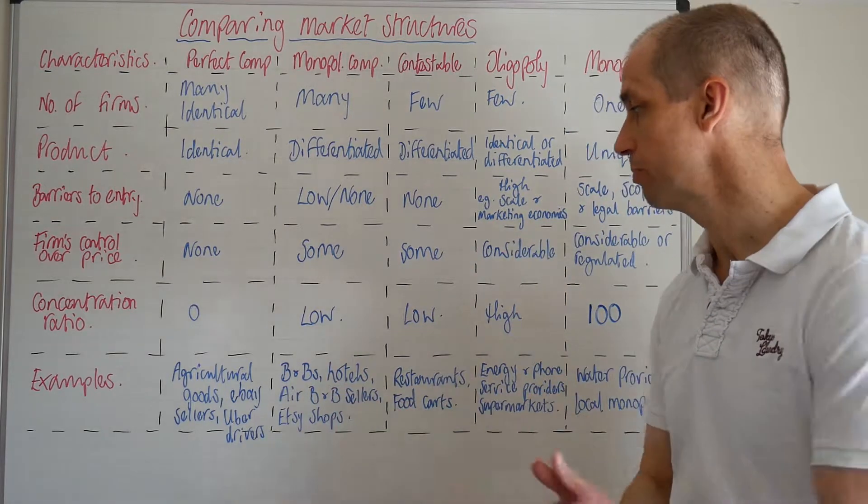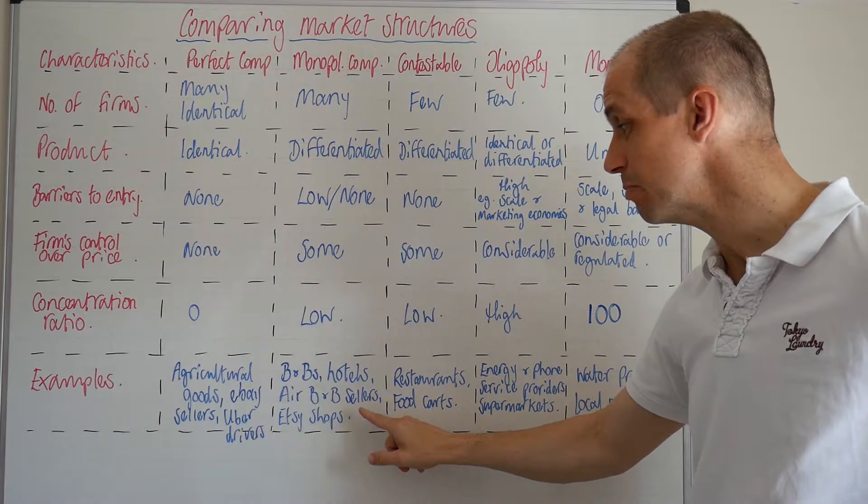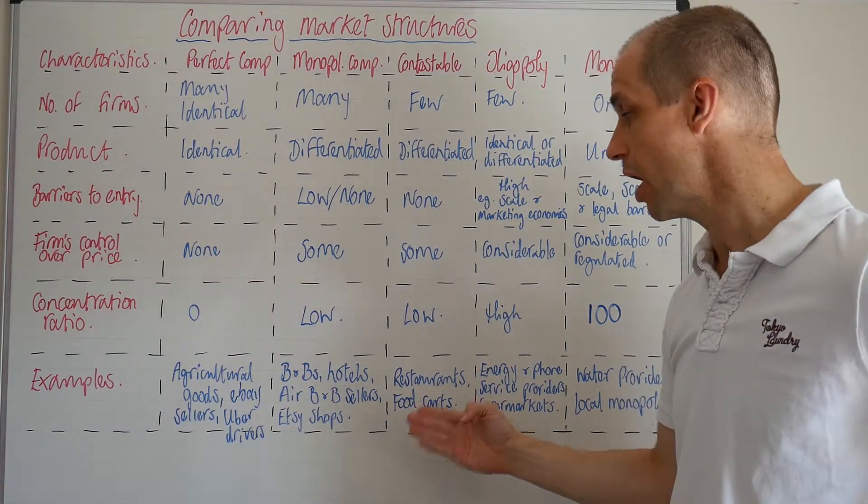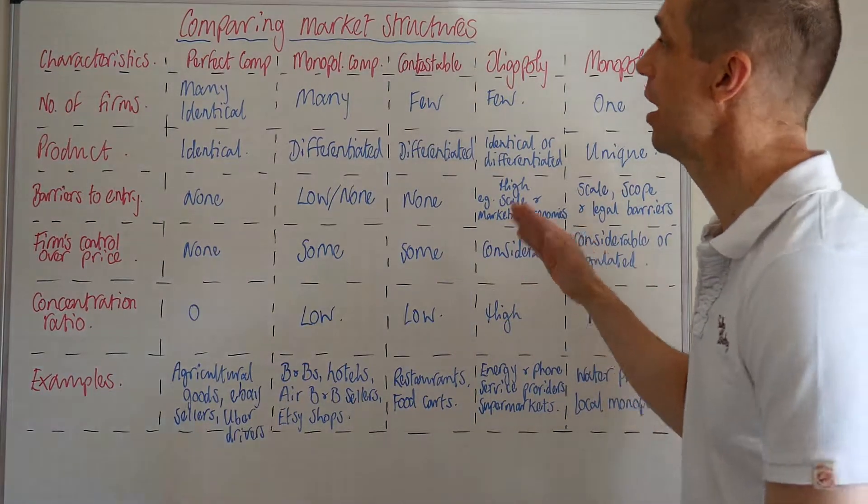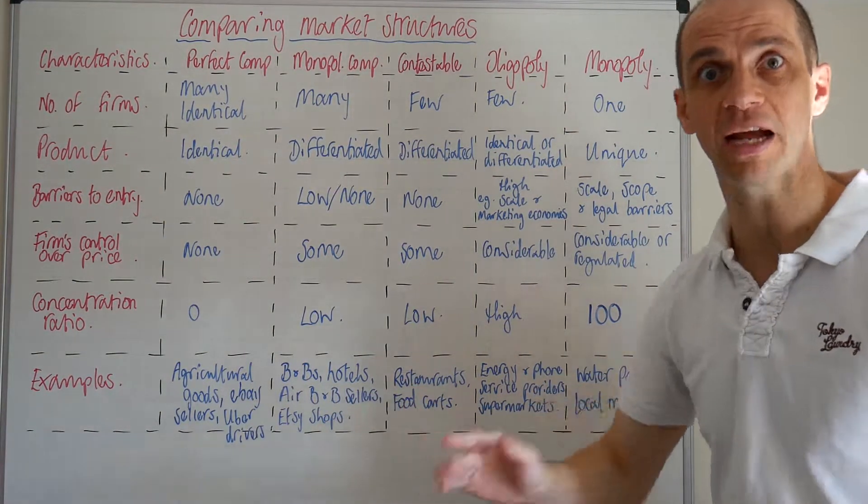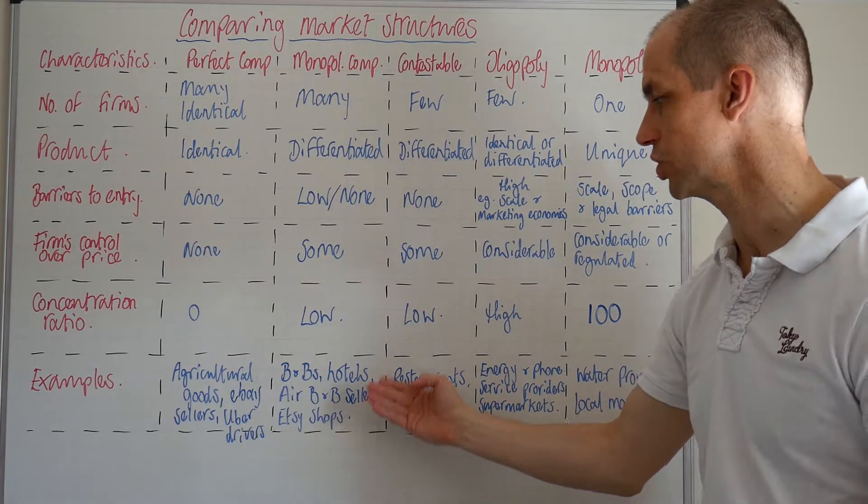Great examples include bed and breakfasts, possibly hotels, Airbnb hotels, as well as Etsy shops. Those are nice examples to consider, again relating this back to how technology can influence these market structures.